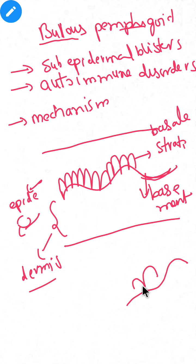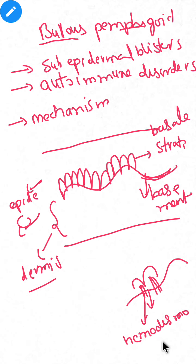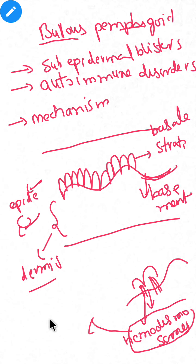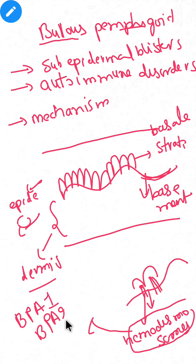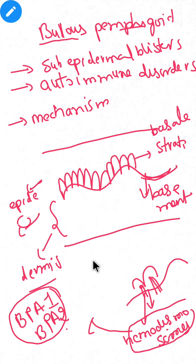The stratum basale cells are connected to the basement membrane through hemidesmosomes. These hemidesmosomes contain two important proteins: bullous pemphigoid antigen 1 (BPA1) and bullous pemphigoid antigen 2 (BPA2). These are part of the hemidesmosomes and connect stratum basale cells to the basement membrane.